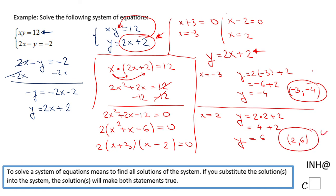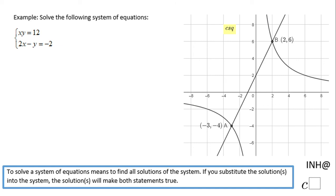Two solutions. We can look at the graphical approach. xy equals 12 is this hyperbola with two branches. The equation 2x minus y equals negative 2 is the linear equation, which gives us this line. You notice these two graphs intersecting at these two points: negative 3, negative 4 and 2, 6, the solutions of the system of equations.